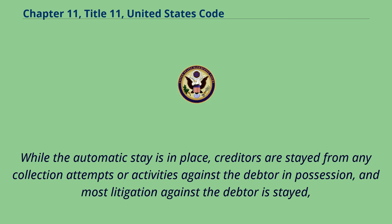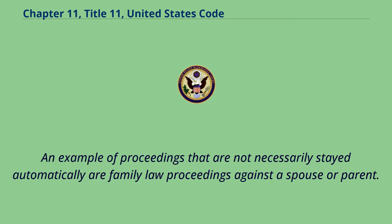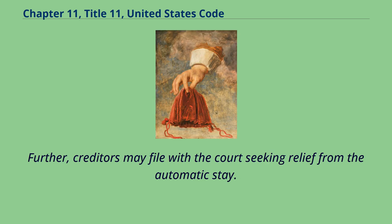Debtors are also protected from other litigation against the business through the imposition of an automatic stay. While the automatic stay is in place, creditors are stayed from any collection attempts or activities against the debtor in possession, and most litigation against the debtor is stayed or put on hold until it can be resolved in bankruptcy court or resumed in its original venue. An example of proceedings not necessarily stayed automatically are family law proceedings against a spouse or parent. Further, creditors may file with the court seeking relief from the automatic stay.